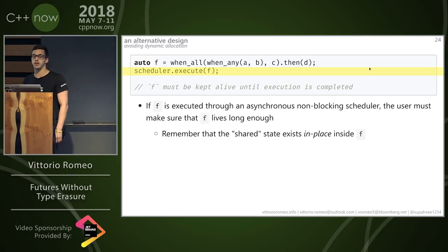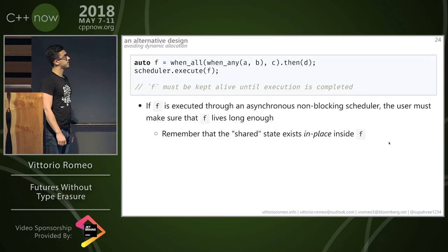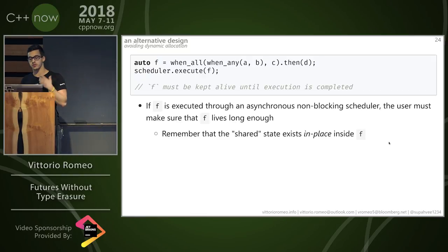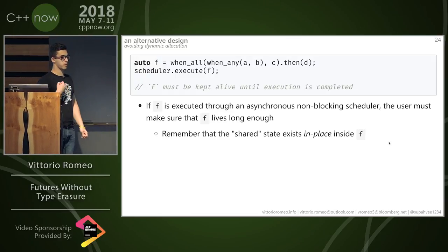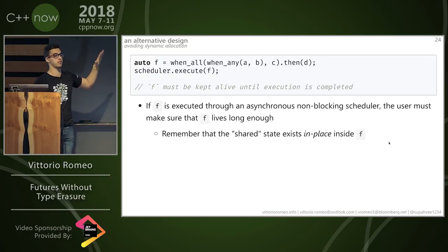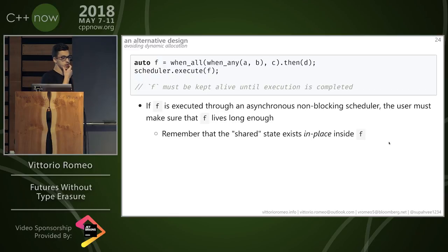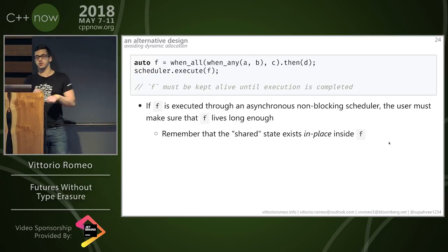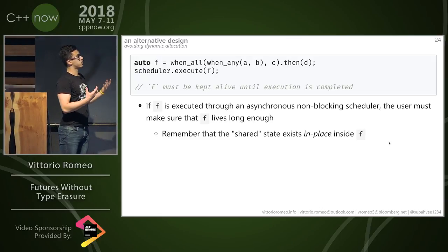Bryce asked why that responsibility should be on the API user. The answer is that you can provide an API that by default ensures the graph lives long enough — using a latch or similar. You probably also want to allow the user to dynamically allocate the whole graph and have a shared_ptr to the whole graph instead of every single piece, for flexibility. A question was raised about when the lambdas are executed — they're not executed during construction. Everything is stored inside a graph object and a scheduler is used to start execution. The scheduler is propagated down to every node and each node knows what to do with it.